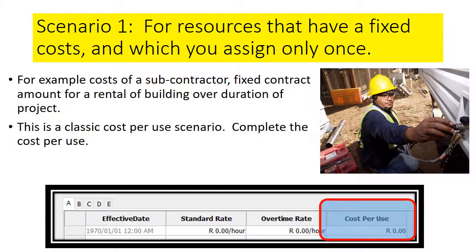The first scenario is for resources where you have a fixed cost but which you assign only once. For example, a subcontractor that must do a certain job where you already paid or will pay just one amount, and that amount will be spread over the duration of the project. This is basically a cost-per-use scenario — complete the cost per use and only use the resource once.